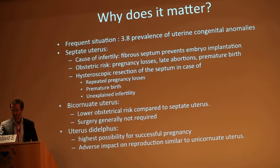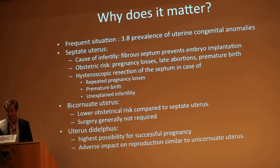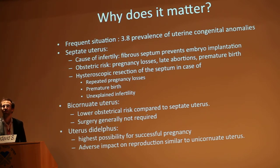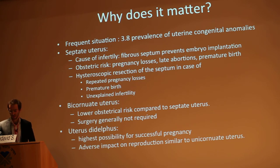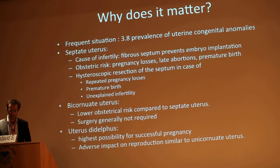The bicornuate uterus also has an adverse impact on the obstetrical outcome, but it is much lower than the septate uterus, and surgery is generally not required. The didelphys uterus has the highest possibility for successful pregnancy of all uterine congenital anomalies. There is no surgery possible, and the adverse impact is similar to that of the unicornuate uterus.